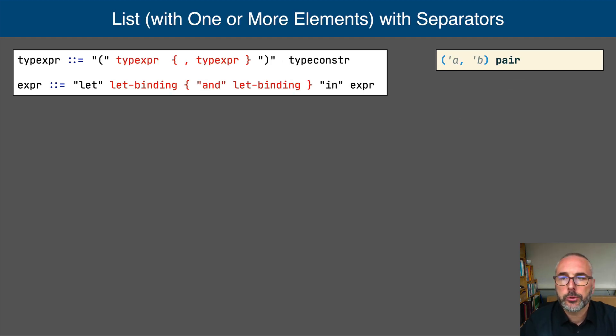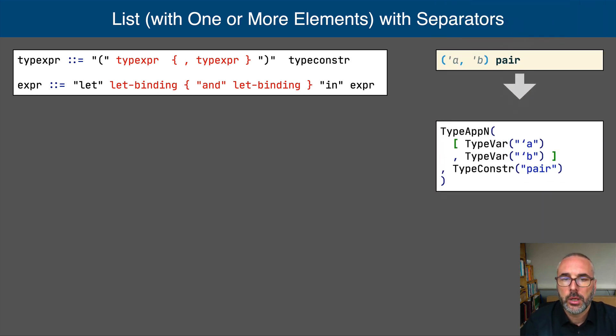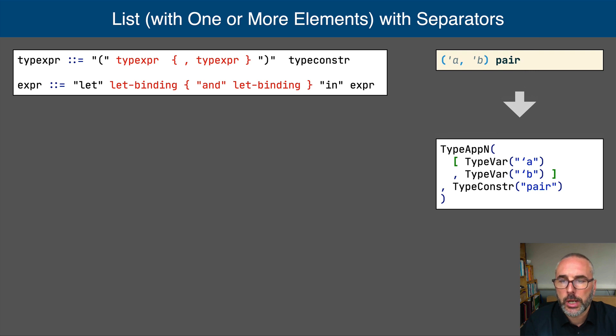A typical pattern in programming languages is lists with separators, as we see here in the arguments of a type constructor or parallel let construct. Just as with lists without separators, we would like abstract syntax terms consisting of the list of elements. OBNF encodes such lists as an element followed by a list of pairs of separator and element. While this is a correct encoding, it produces an abstract syntax term consisting of an element in a list instead of a single list.